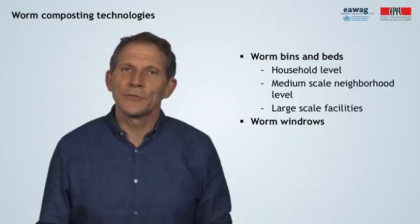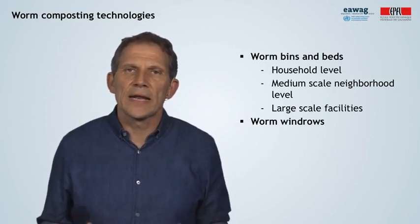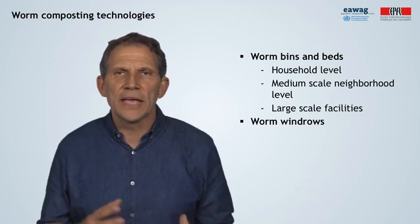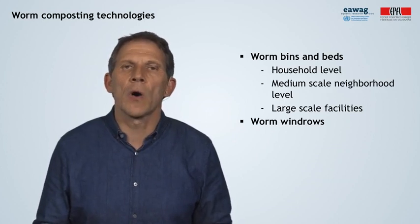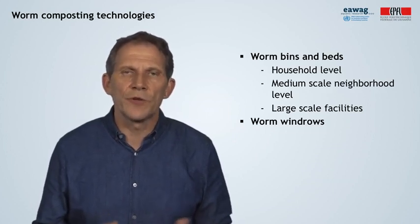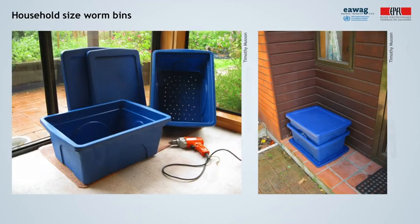Now let's look at different technologies. We'll look at worm bins and beds, which can be operated at household level, medium-scale neighborhood level, or even large-scale facilities. Sometimes we also see worm windrows. Here are some examples of household-scale worm bins — different trays where you can feed the worms with your food scraps. Although such bins are commercially available, you can also make them yourself with normal plastic bins, as shown in these pictures.